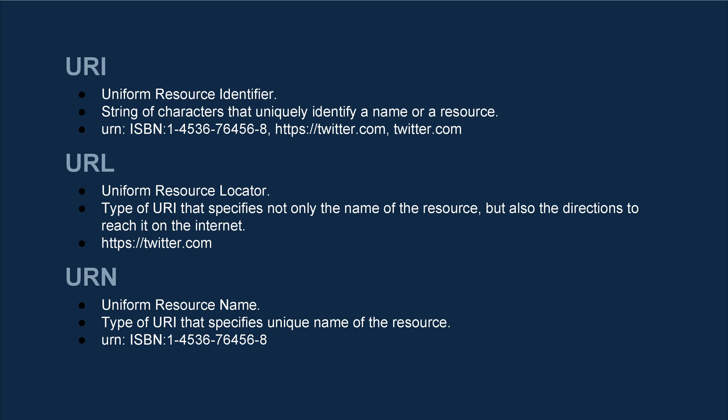URL is the type of URI that specifies not only the address, but also the directions. So it is not only defining the resource, but also telling us how to reach that resource. If we take the example of Twitter again, twitter.com is the resource name, and the direction to reach it is https. The direction is usually a protocol like https, http, ftp, or mailto.